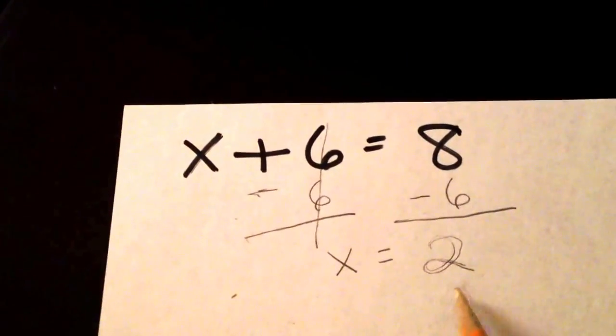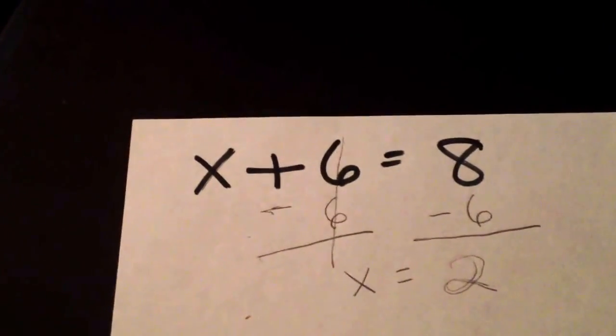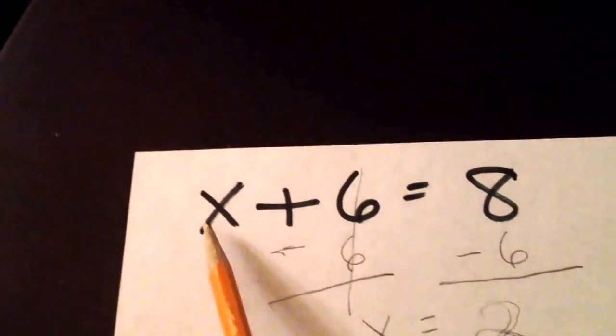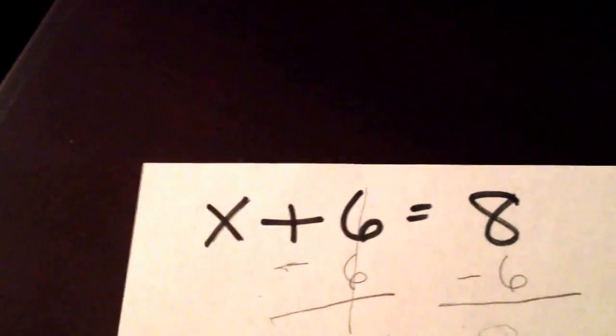So if we wanted to go back and check this, we would say x equals 2. So we could plug this back into our original equation. So x equals 2. So 2 plus 6 equals 8. And that's correct.